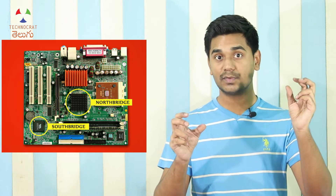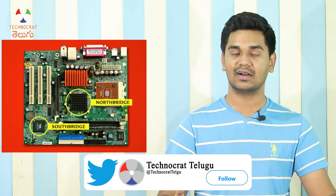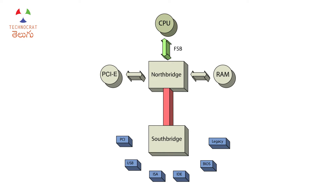Northbridge and Southbridge are two separate chips — two sets of chips — that's why together they are called the Chipset. The Southbridge has PCI bus slots, IDE ports, SATA ports, and USB ports. These don't communicate directly with the CPU; they go through the Southbridge, then the Northbridge, then the CPU. Northbridge is very fast because it is connected to fast components.